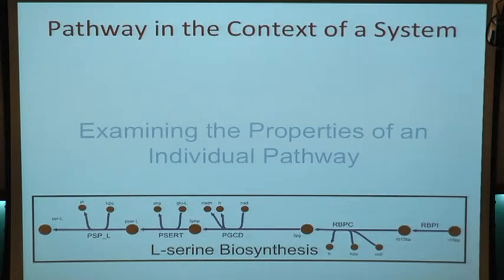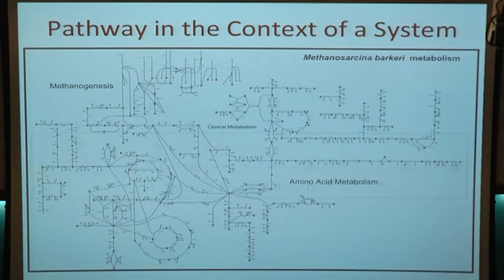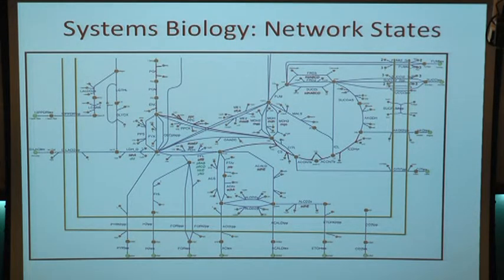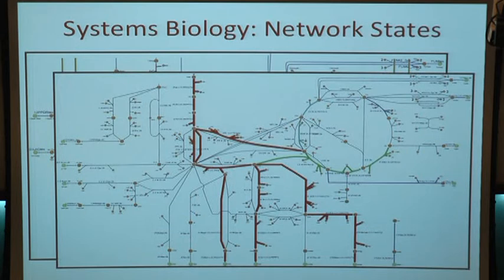Another aspect of these reconstructions is that you can put pathways in the context of the system, examining properties of an individual pathway using these maps you can zoom into. You can also simulate states on top of these networks — for example, a flux state where color coding or thickness of lines represents the amount of flux going through any particular reaction. You can also show up or down regulation of different components on these maps.